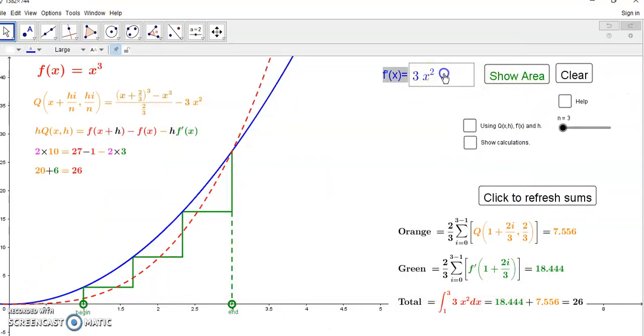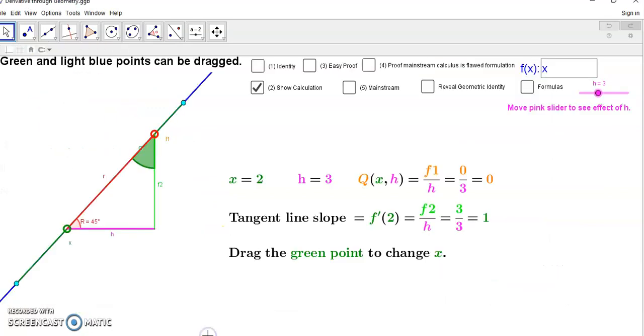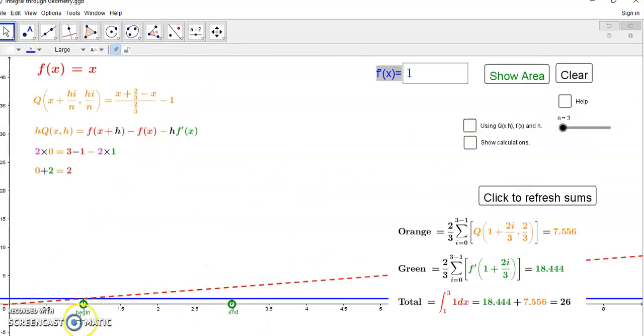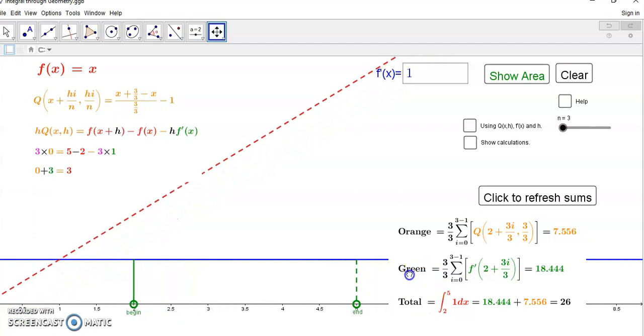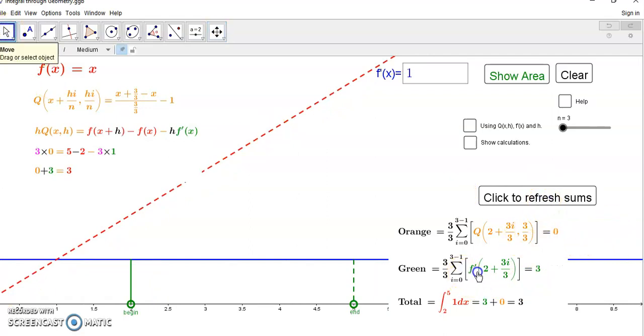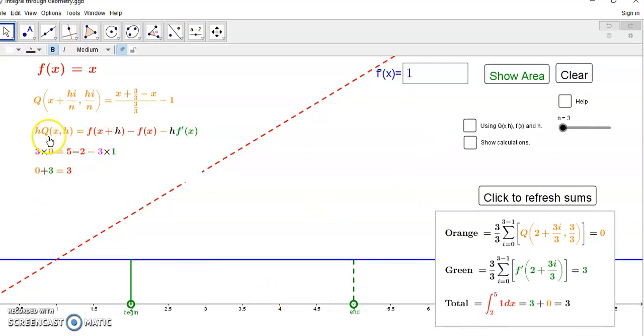So now the derivative of this will be one. We want it to be from x=2 and h=3, so from 2 all the way up to 5. We'll readjust these axes so we can see what's happening.